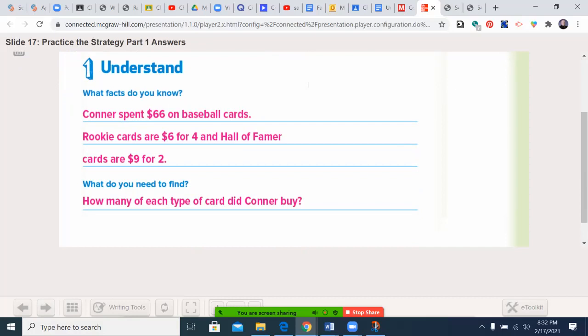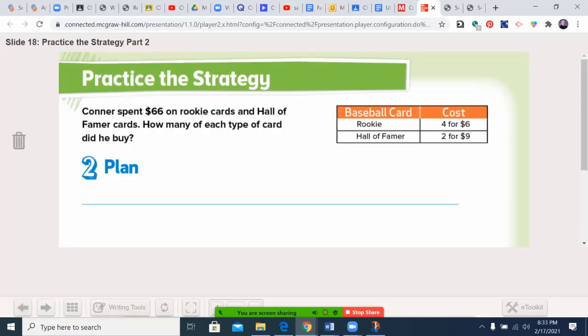These are all of our facts. What do I need to find out? How many of each type of card? You can paraphrase this. Like I might put RC is four for six, HOF nine for two. When I'm writing what do I need to find out, I'm probably going to cut it off right there. If you need another moment, pause the video.